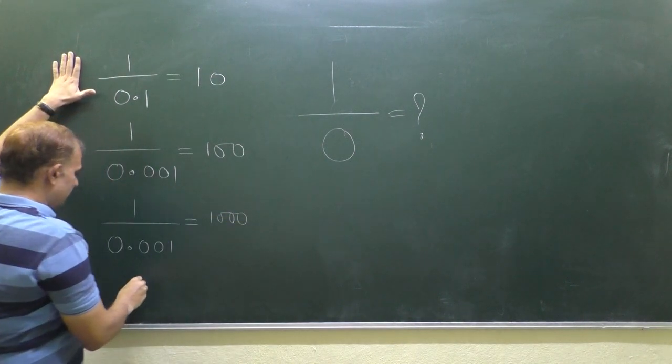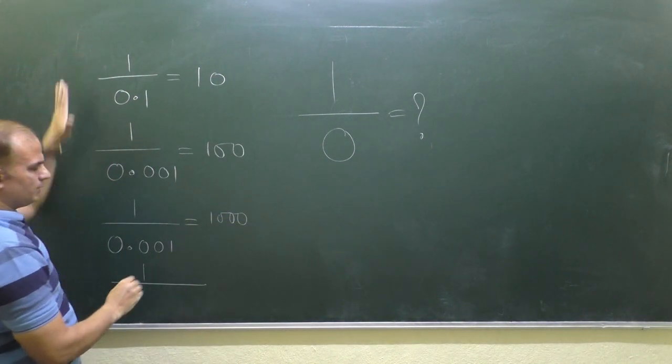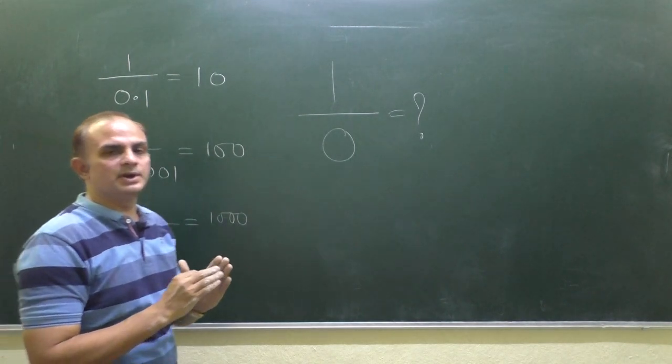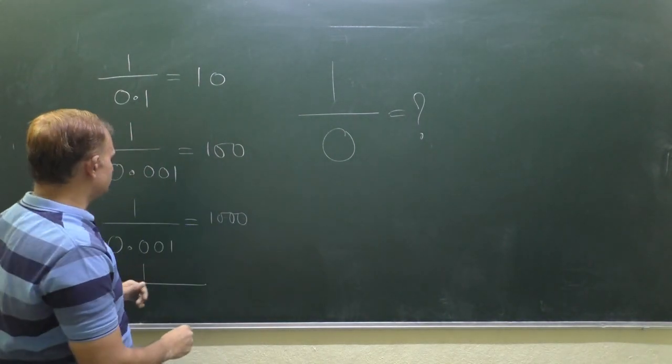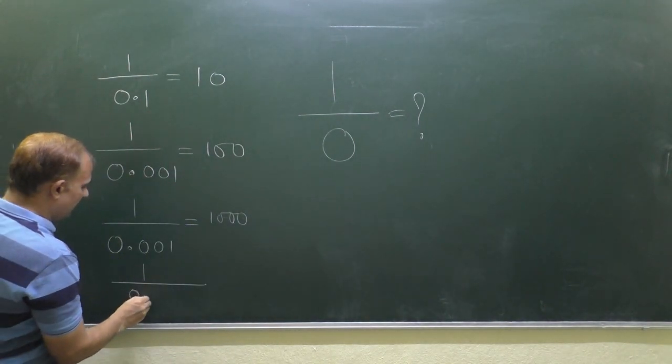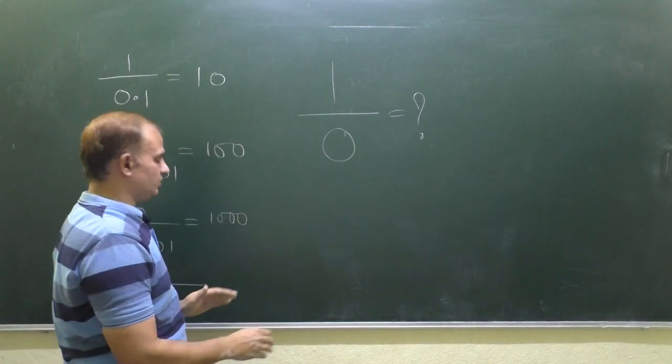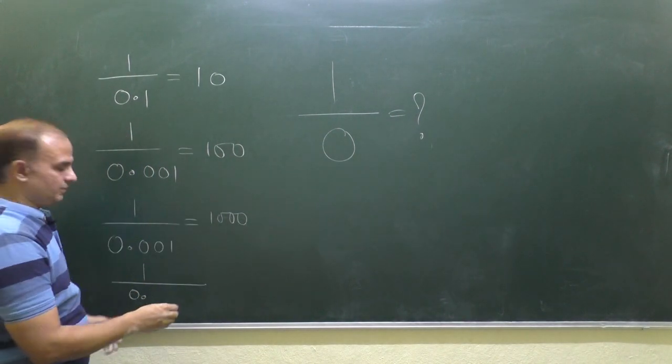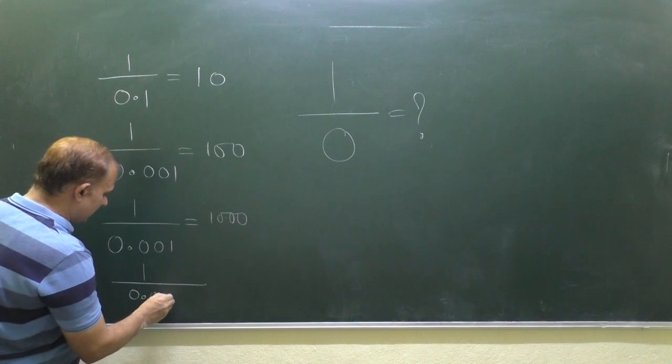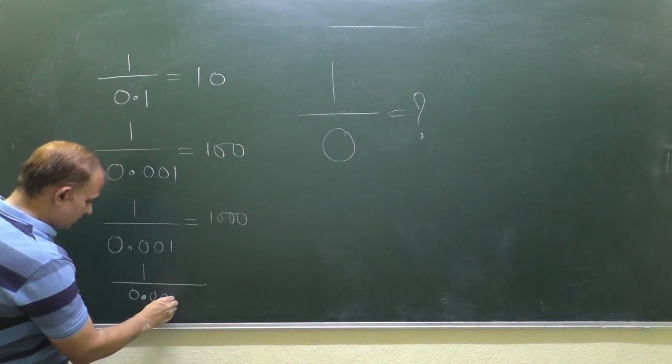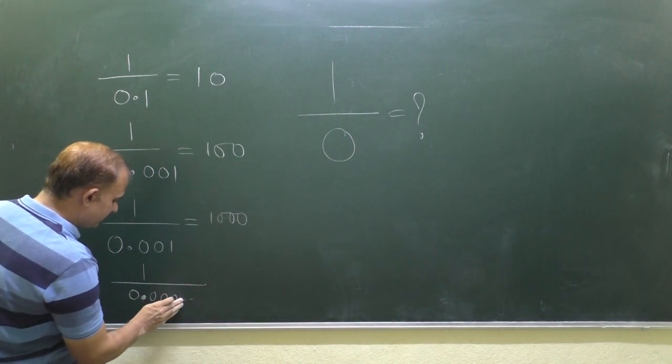And what we are doing is we are just decreasing the values of the denominator, and we are trying to approach towards zero. We are very far from zero. Let's see when can we approach to zero.